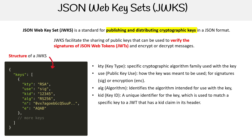An interesting thing is that if you have a JWT, its header will include a key ID in it. For example, if we're using something like Amazon Cognito — and I'm not sure about other cloud providers — but with Amazon Cognito, they have a kid in their header and you have to use JWKs to verify it.